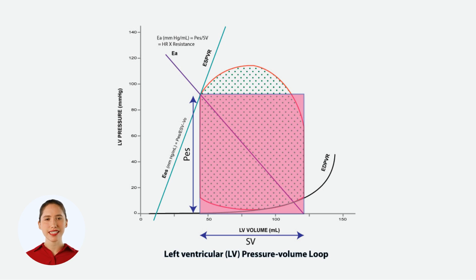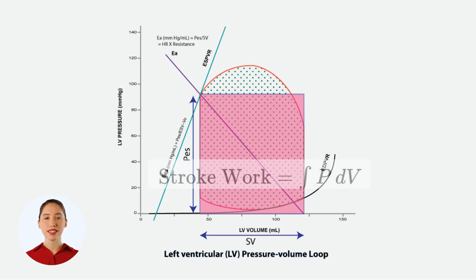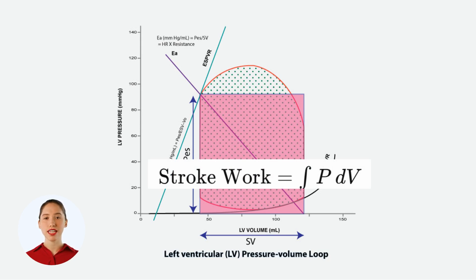Overall, the areas are close enough that we often use PV boxes for simplicity in textbooks and articles. This way, it is easy to understand that the stroke work of the left ventricle is represented by the area of the box, and mathematically, it's expressed as the integral of pressure, P, with respect to volume, V. This integral represents the total energy expended by the left ventricle to pump blood.